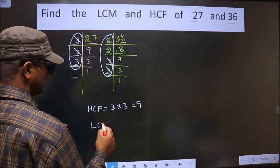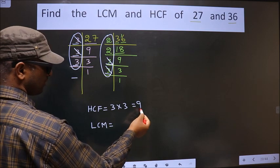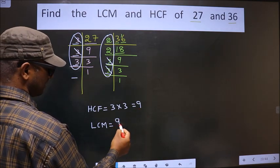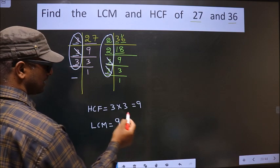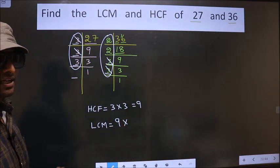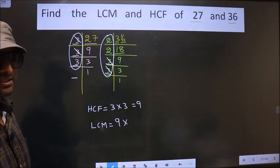Now to get LCM, whatever you got HCF, to that we should multiply by certain numbers. And how do we decide those numbers?